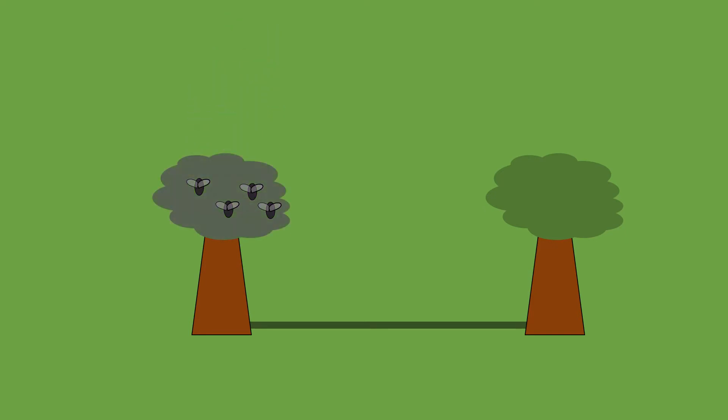Trees also send warnings about various things such as drought, disease, and insect attacks to each other so they can alter their behavior to better fit the situation.